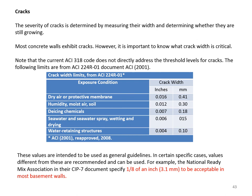These values are intended as general guidelines. In certain specific cases, different values are recommended. For example, the National Ready Mix Association in their CIP 7 document specifies one-eighth of an inch as acceptable in most basement walls.